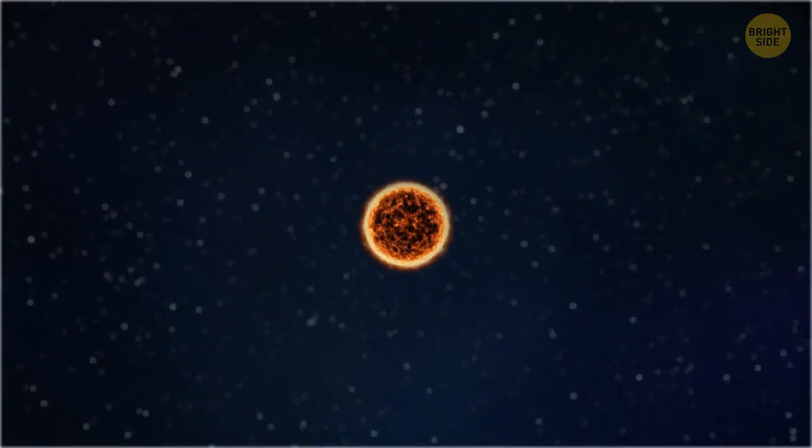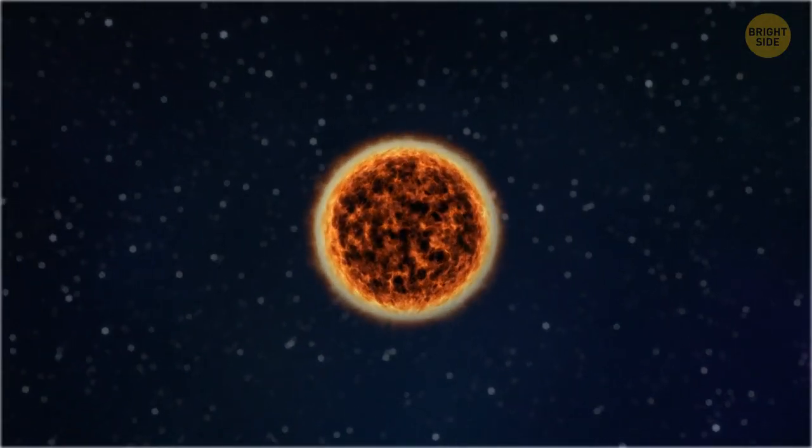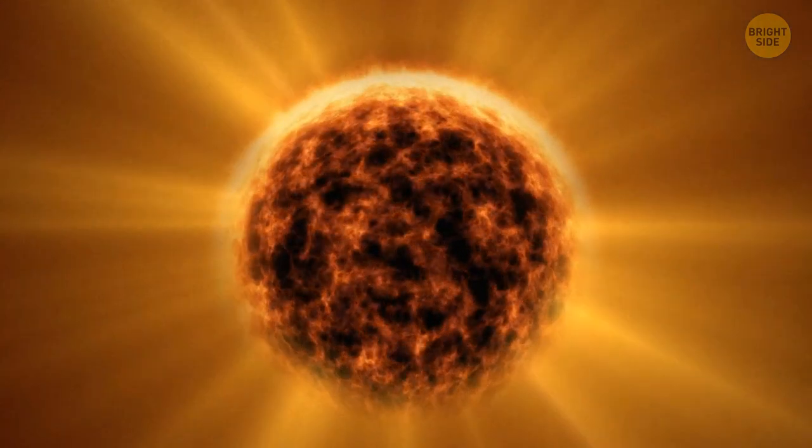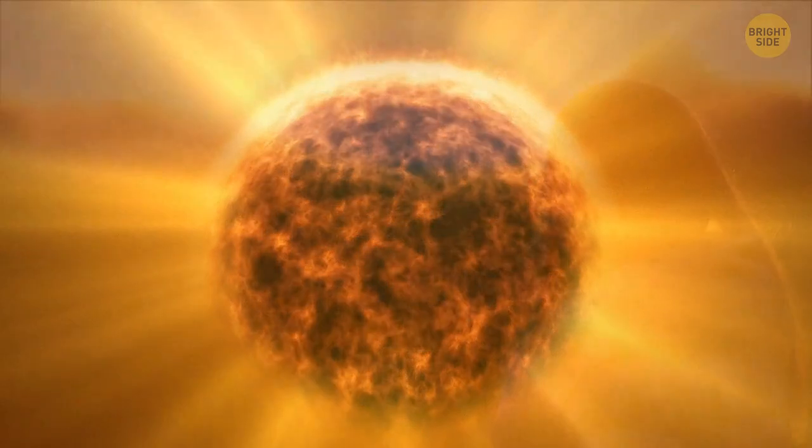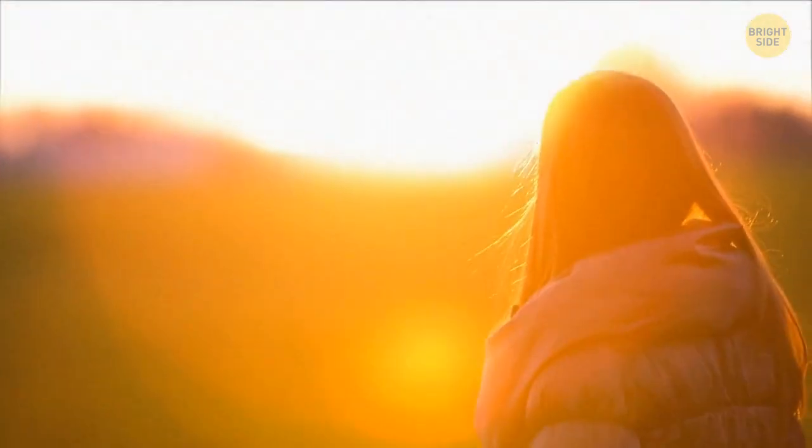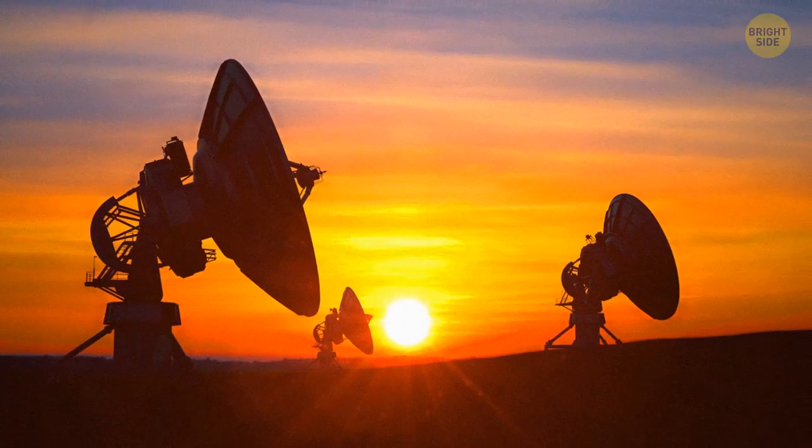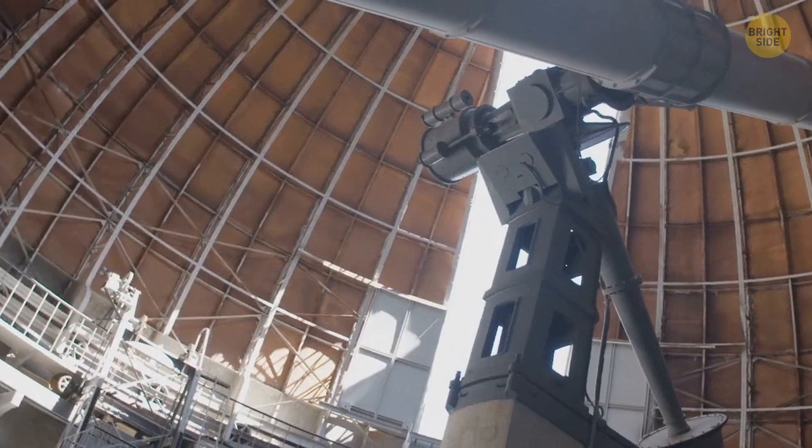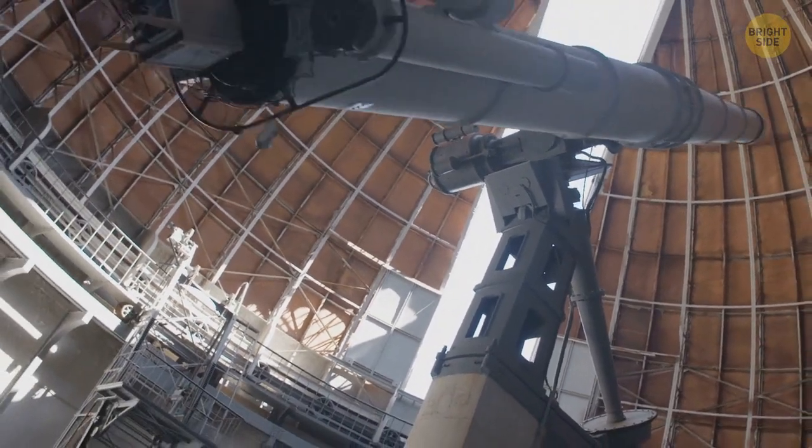The next layers are the sun's atmosphere. First, the photosphere. This is the layer that gives off light. And that's exactly what you see when you look at the sun. But careful, don't do that. You need special equipment to look at our star. The photosphere is up to 250 miles thick. This is about the height at which the International Space Station moves above Earth.